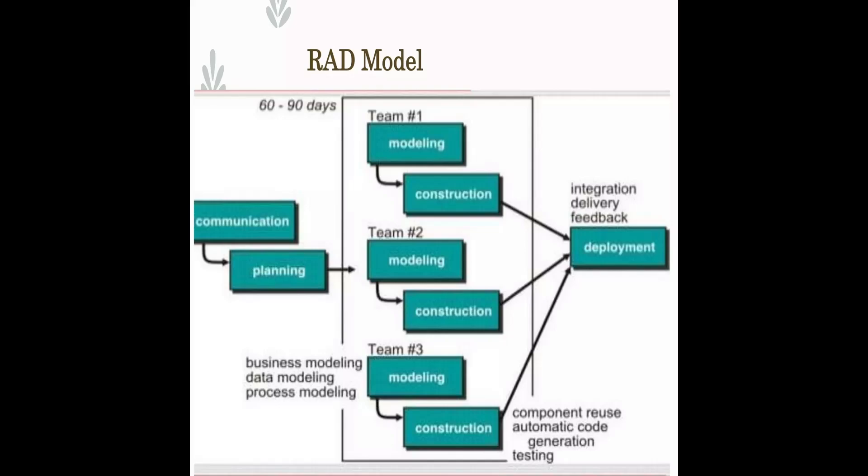If a company has a high budget and is ready to spend more money for faster delivery, this model is appropriate. The whole project is divided into multiple modules and each module is given to a particular project team. Each module follows: communication, planning, business modeling, design modeling, process modeling, and application generation. Communication means gathering customer requirements and breaking the project into different modules. Planning means assuming requirements are split into different modules.